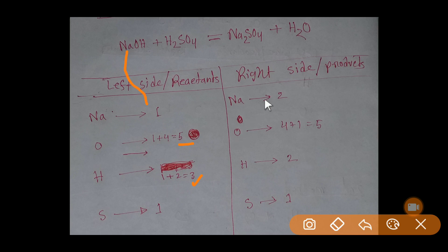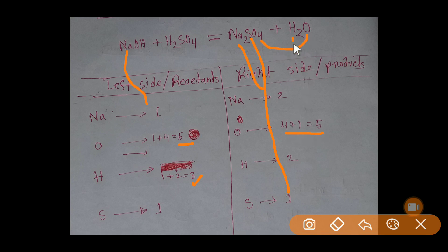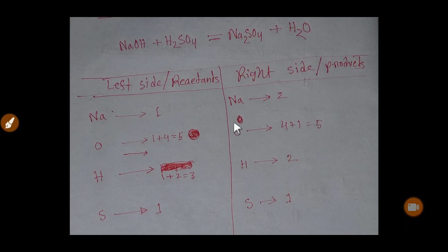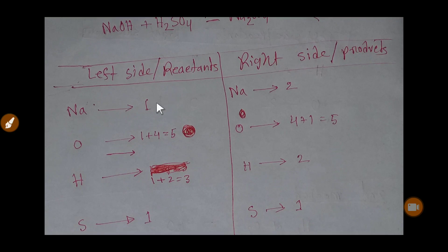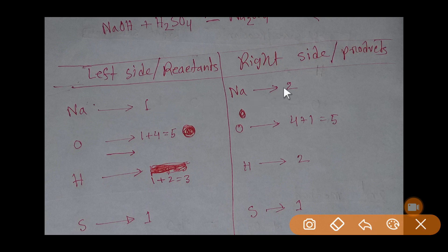On the right side, we are getting two sodium atoms, one sulfur atom, four plus one equals five oxygen atoms, and two hydrogen atoms. Comparing both sides: sodium is not balanced (right side has two, left side has one), oxygen is balanced, hydrogen is not balanced, and sulfur is balanced.